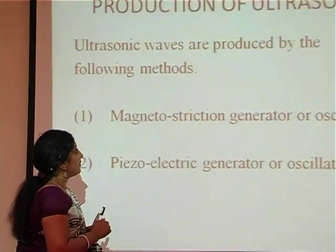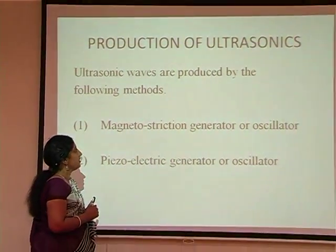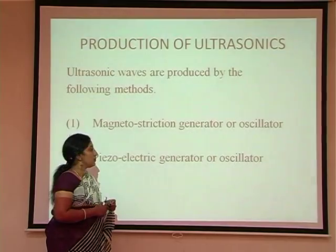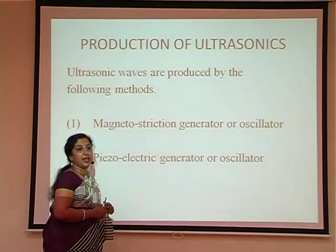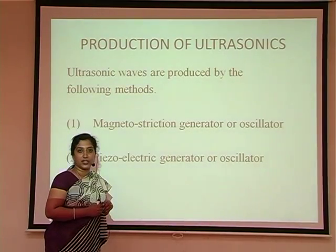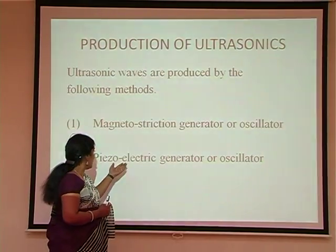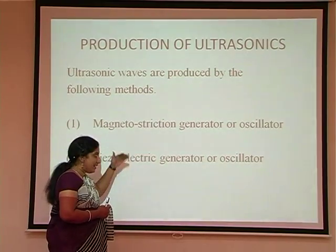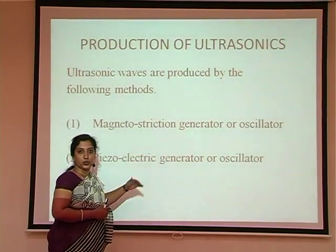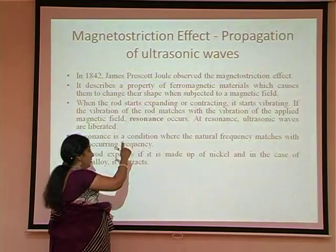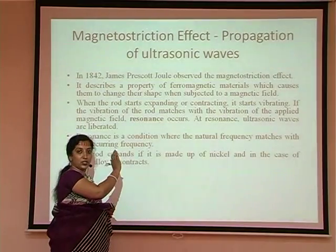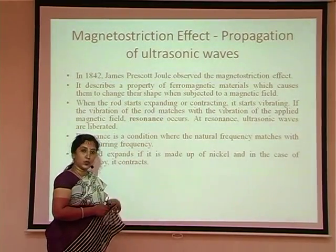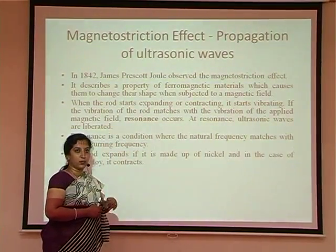Now we have the production of ultrasonic waves. Ultrasonic waves are produced by two ways: one is the magnetostriction generator and the other one is the piezoelectric generator. To understand these two, we should first know the magnetostriction effect and the piezoelectric effect. We will see them one by one.